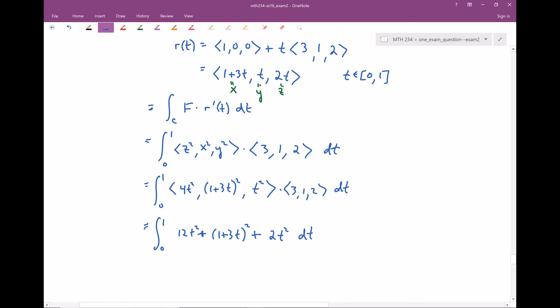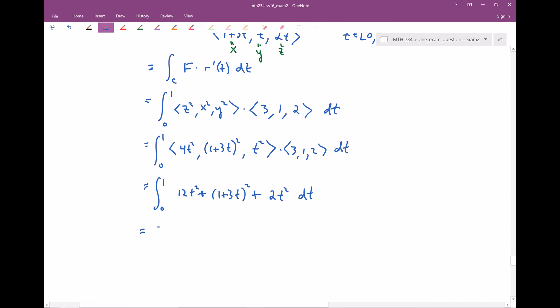Alright, I've put off foiling this out long enough. I guess first I could combine this 12 and this two to make 14 T squareds. And now let's go ahead and foil this out. So the firsts, the inners, that's gonna be three T. The outers is gonna be another three T. And the lasts, that's gonna be three T times three T. That's gonna be nine T squared. So we're integrating from zero to one. All the T squared terms, that's gonna be 23 T squared, plus six T, plus one.